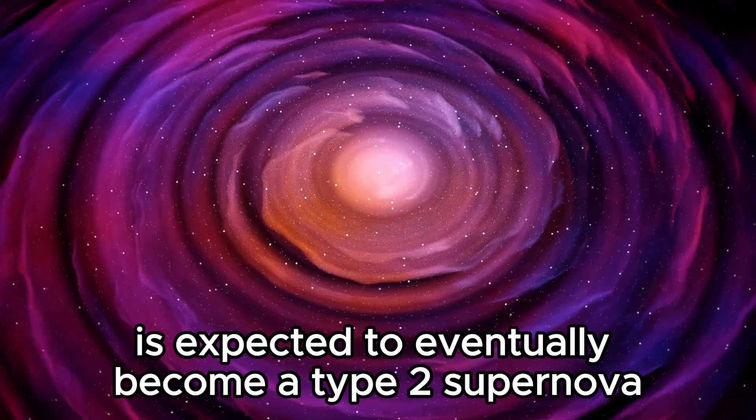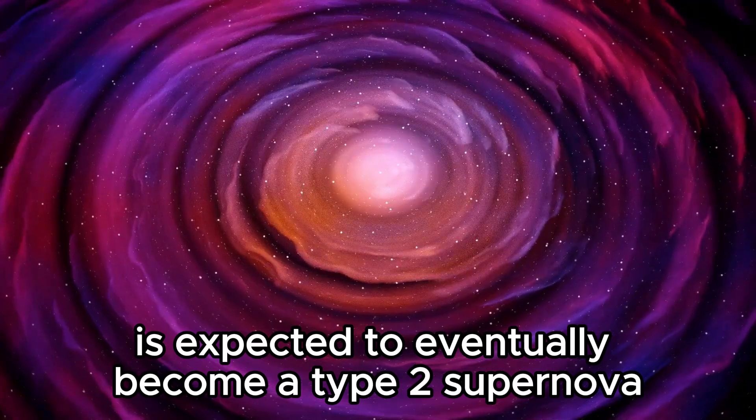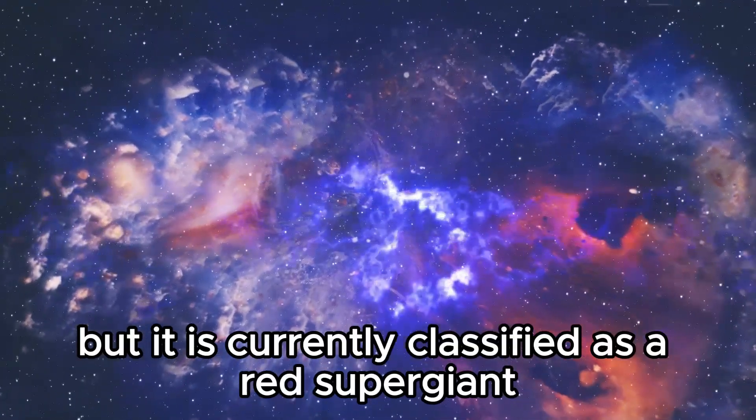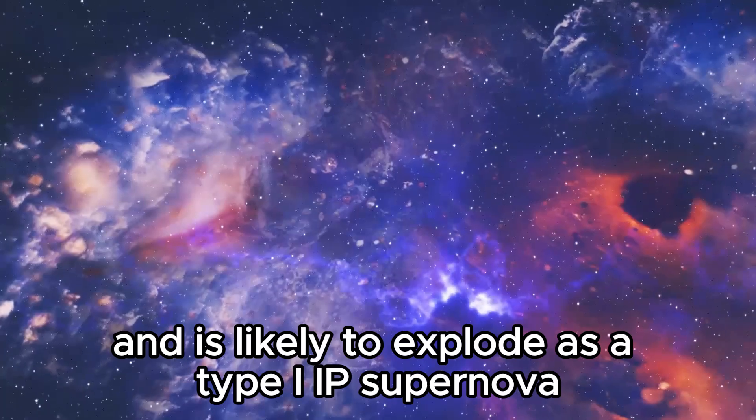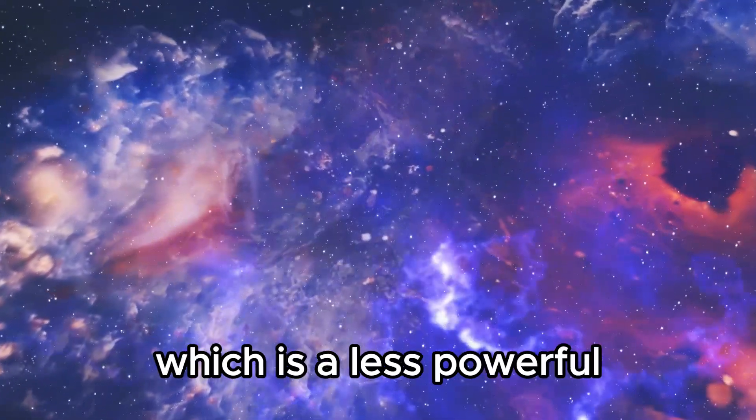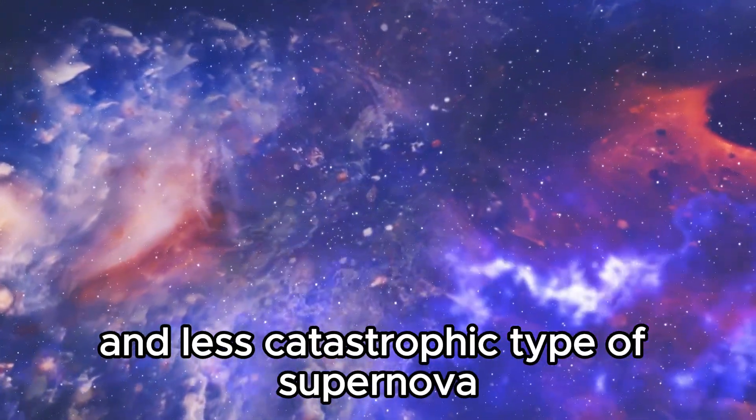Betelgeuse, on the other hand, is expected to eventually become a type 2 supernova, but it is currently classified as a red supergiant and is likely to explode as a type IIP supernova, which is a less powerful and less catastrophic type of supernova.